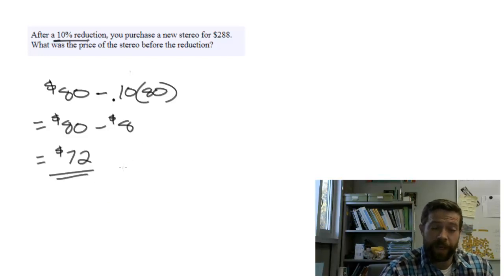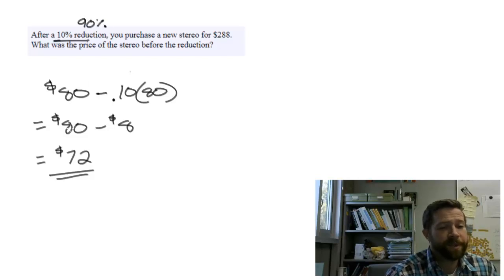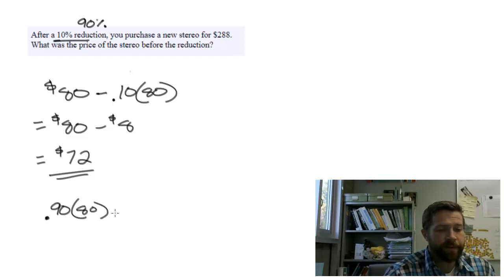The faster way is to realize that if you take 10% off of something, you're left with 90% of the original price. So instead of taking 10% off 80, we can say in one move, find 90% of $80. If you do this calculation, 90% of $80 gives you $72.